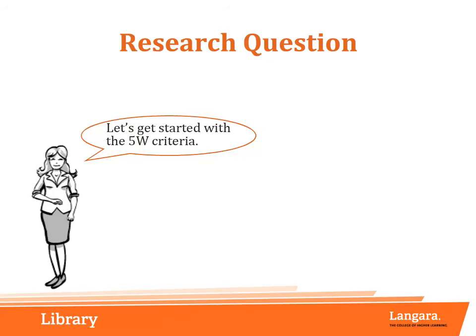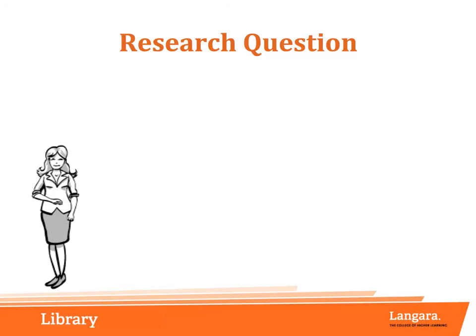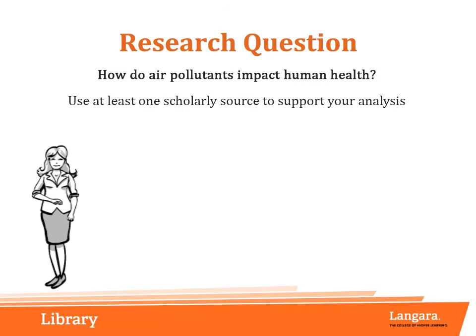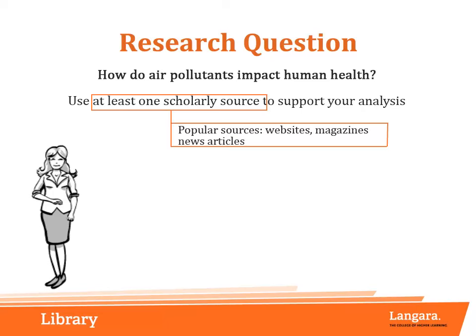For this tutorial, we will use a sample research question to guide our analysis of several different sources. Our question is: how do air pollutants impact human health? Our instructor has asked us to use at least one scholarly source to support our analysis. This implies that we may also use popular sources, such as websites, magazines, or newspapers in our research, as long as we are looking at scholarly books and articles as well. Depending on the nature of our assignments, it will sometimes be appropriate, and even preferable, to use non-scholarly sources. If you're ever in doubt about whether or not you are able to use popular sources, be sure to ask your instructor.